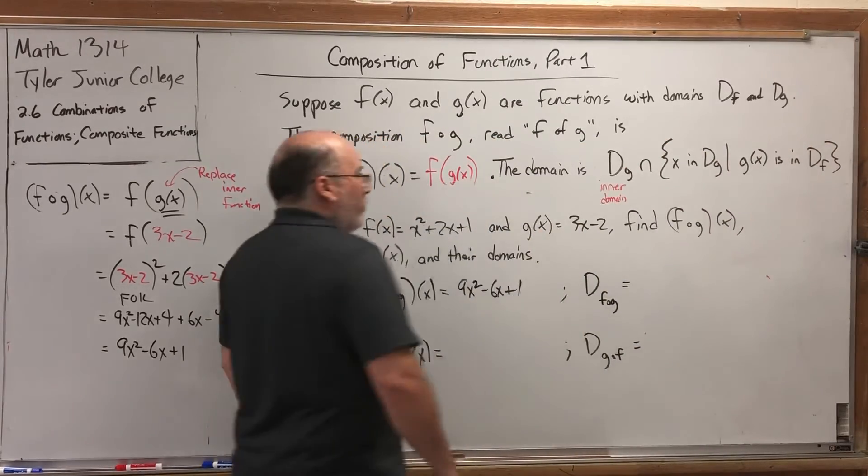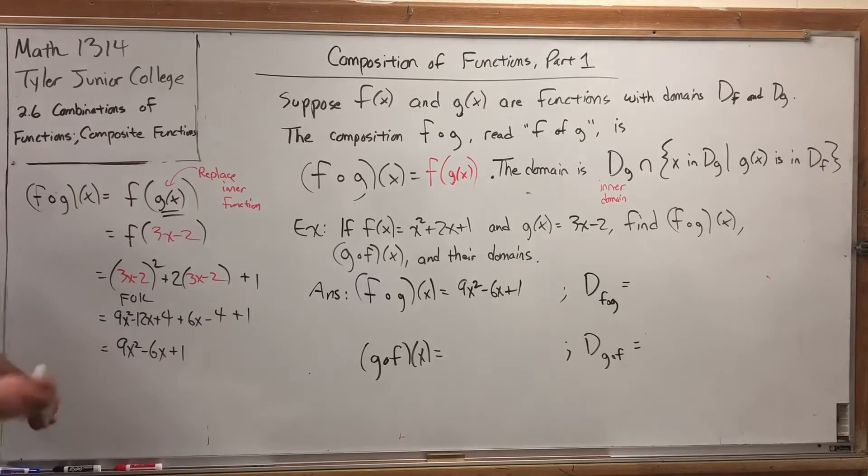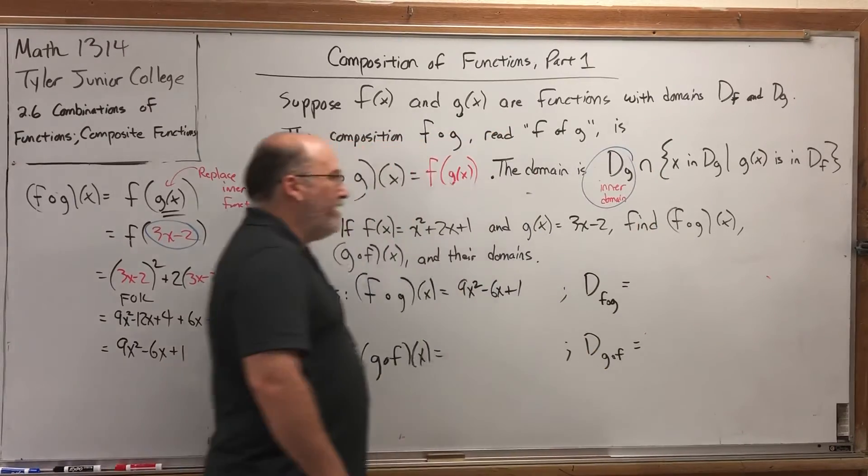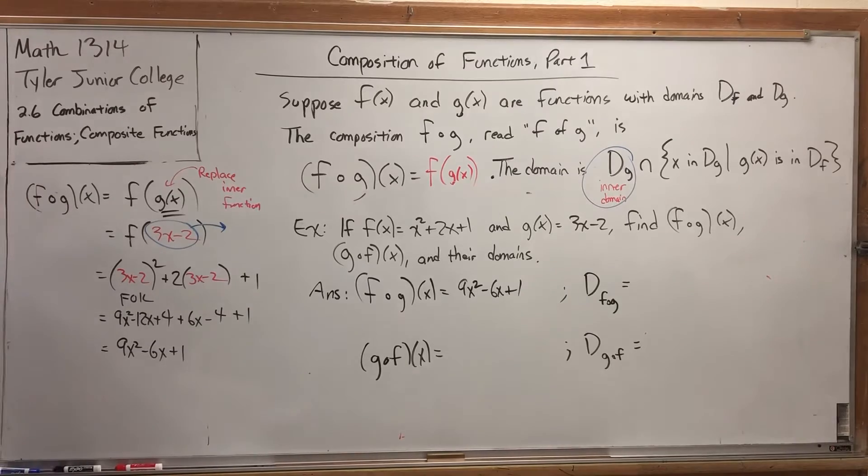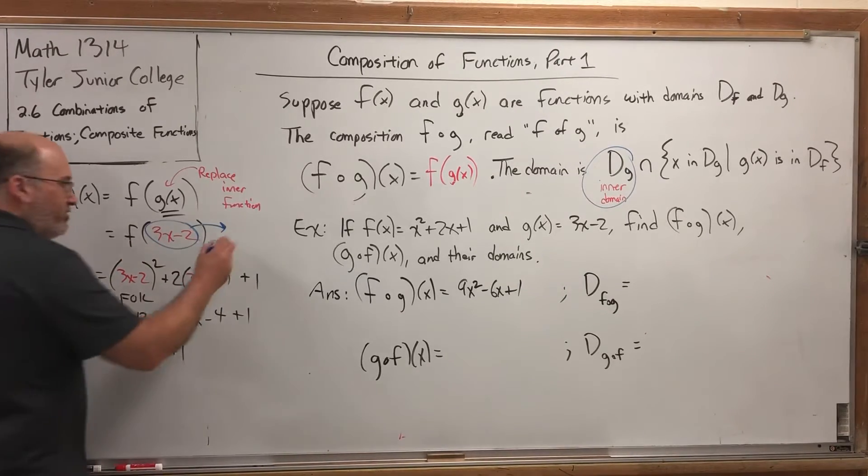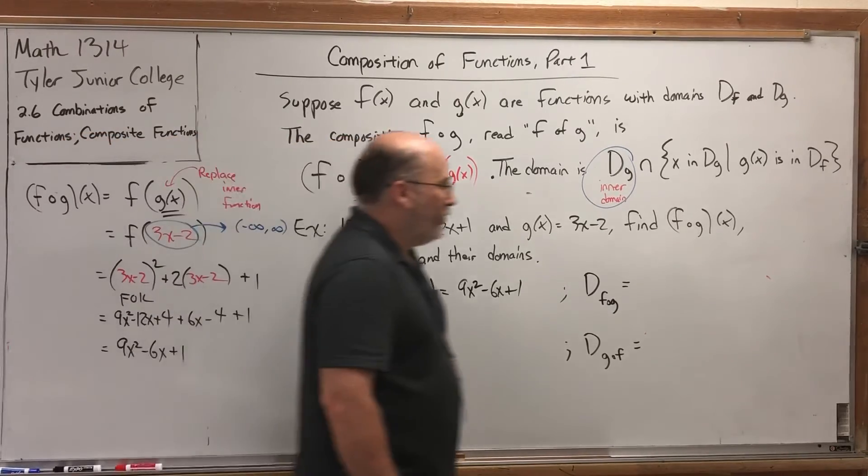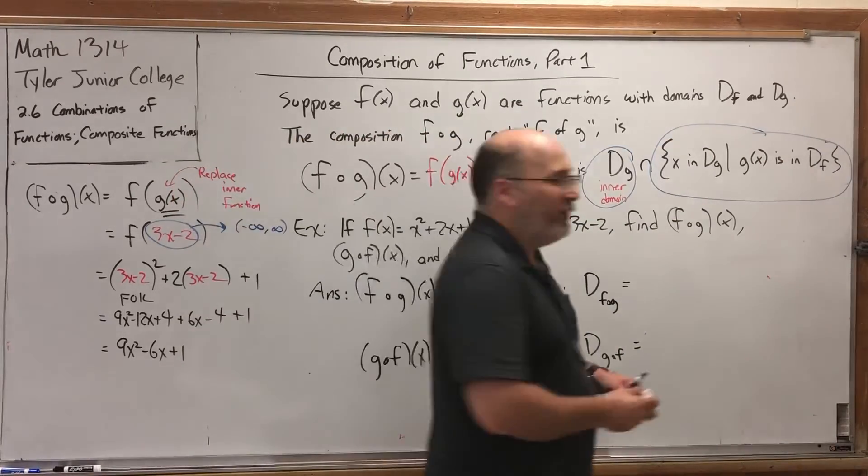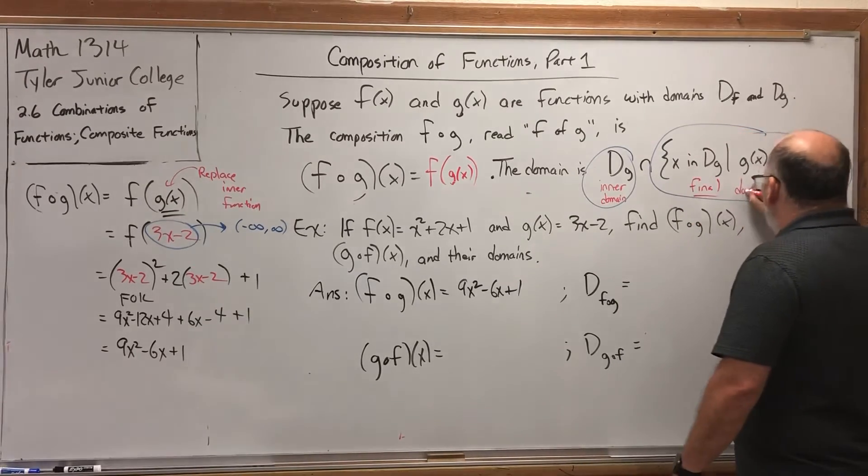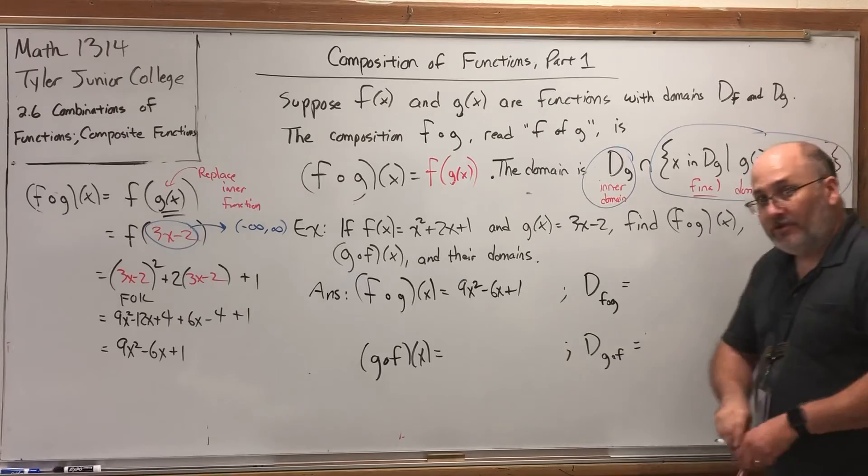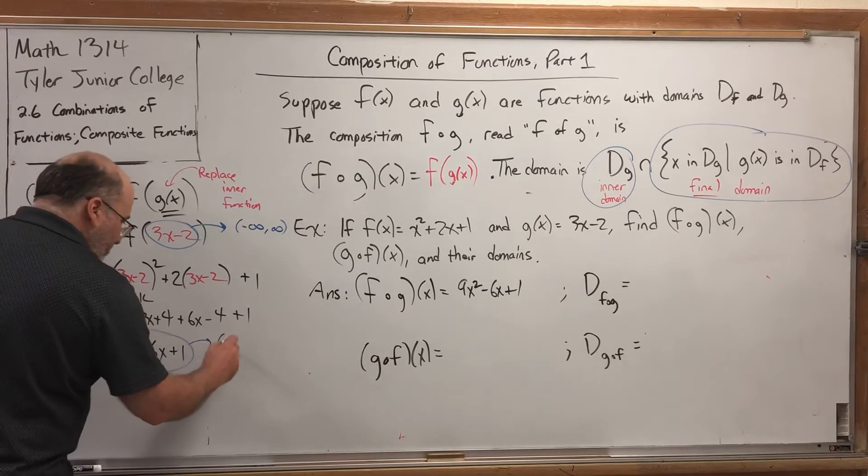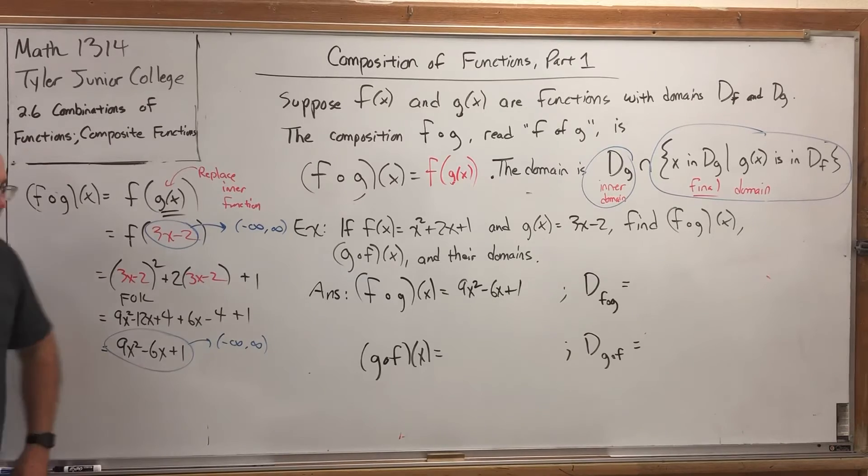The first place the x is trying to go is into the inner function. So, this part is saying, look at the inner function and its domain. Well, 3x - 2 has no issues. Its domain is negative infinity to infinity. But for the rest of this mess, you don't look at the outer function. You look at the final function. In other words, you go to the very end and look at the domain. So, we go here. That's another polynomial. Its domain is still negative infinity to infinity. So, again, to define the domain of a composite function, you look at the first inner function and you look at the final function. First function, final function. And intersect their domains.